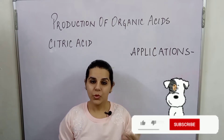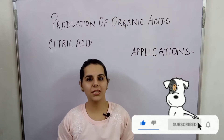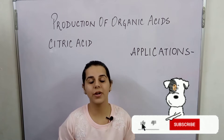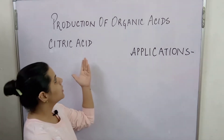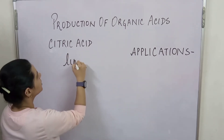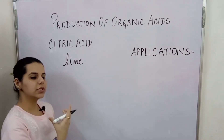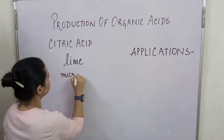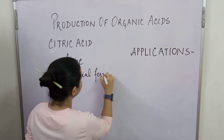Production of organic acids — citric acid is a very important organic acid and it finds huge applications in different industries. Citric acid was initially being isolated from lemon, but nowadays it is being produced through microbial fermentation.